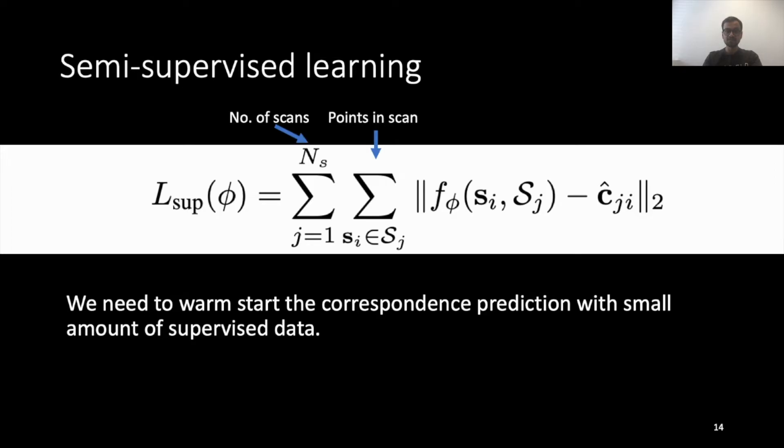The supervised objective sums over all the labeled scans and we minimize for every scan point the L2 distance between the network predicted correspondences and the ground truth. Our experiments show that with a small initial warm start, LoopReg becomes increasingly more accurate as more and more unlabeled data is provided to the method.